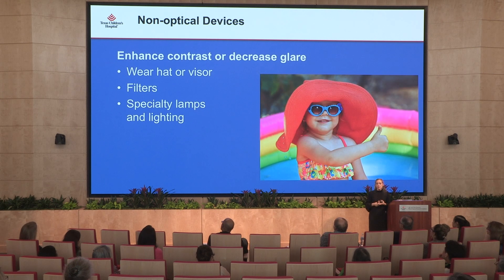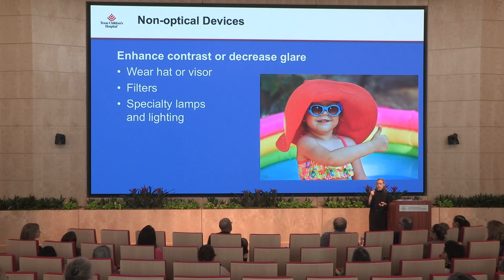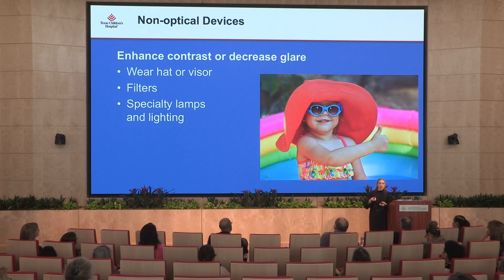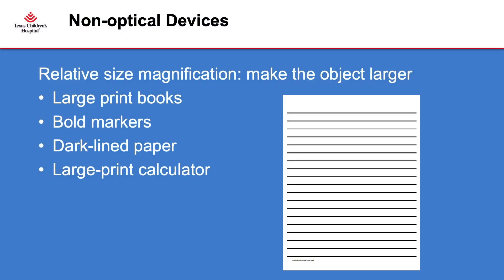Patients with aniridia and albinism are frequently light sensitive, so we often recommend certain types of filters — a hat or visor when outside. Kids who struggle with contrast can have specialty tinted lenses to enhance contrast. Simple modifications include using wide-ruled or large-ruled paper, and a felt-tip pen instead of a number two pencil because the contrast is often too low and they can't even read their own handwriting. A large print calculator or enlarged remote are also helpful.